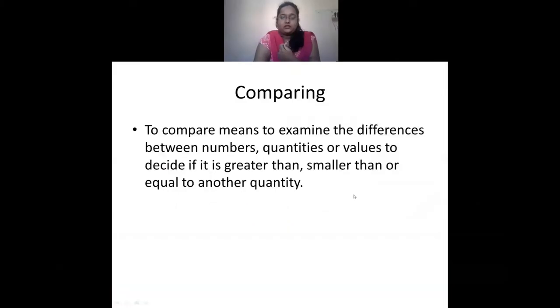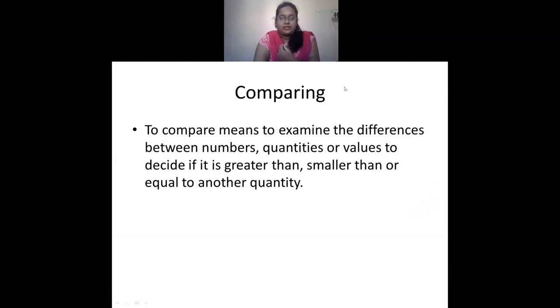We are going to compare two things. Comparing two things means to examine the differences between numbers or quantities. For example, all things are of different shapes and sizes. Some things are bigger, some things are smaller, some are long, some are short. This is how we are going to compare things.